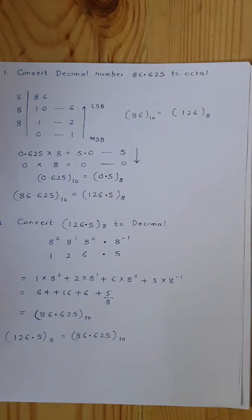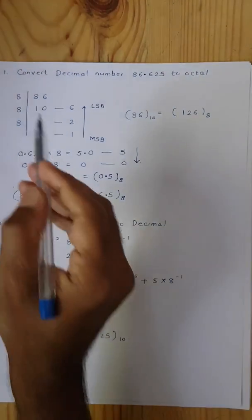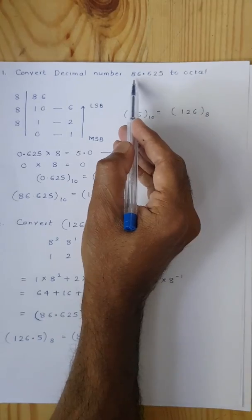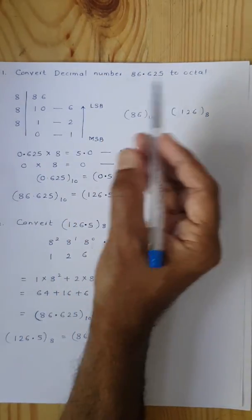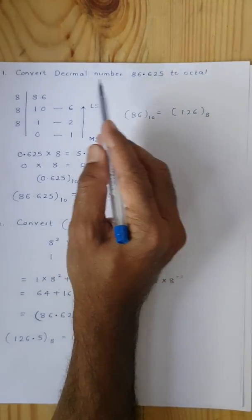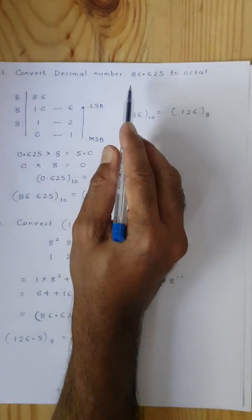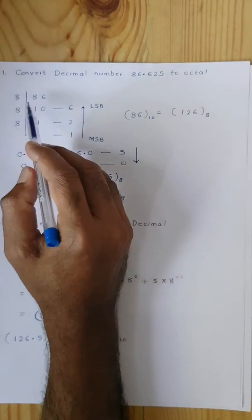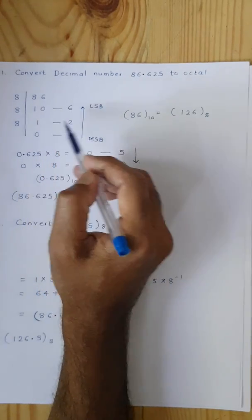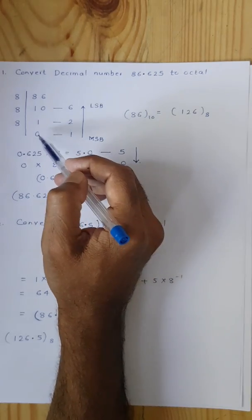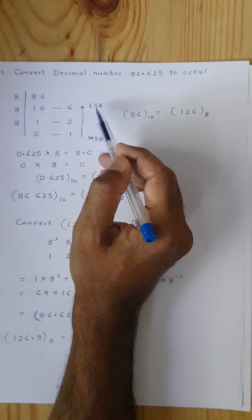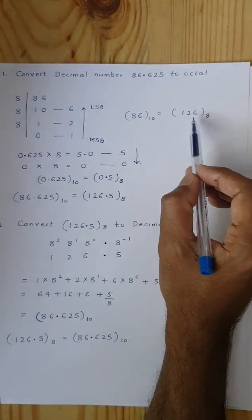Now let's convert decimal number 86.625 to octal. For the integer part, when converting decimal to octal we divide by 8, just as in binary we divided by 2. So 86 divided by 8: 8 tens are 80, remainder 6; then 8 ones are 8, remainder 2; 8 cannot divide 1, so 1 is carried forward. Writing in reverse order from MSB to LSB, we get 126 in octal.